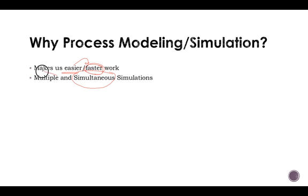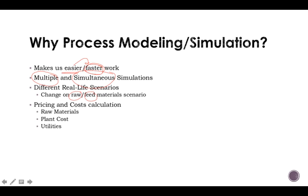Now, not only that, we can work with simultaneous simulations. Even though humans can only work one simulation per one simulation, one process per one process, we can have multiple simulations running. If we change raw or feed material, we can model those examples very fast.